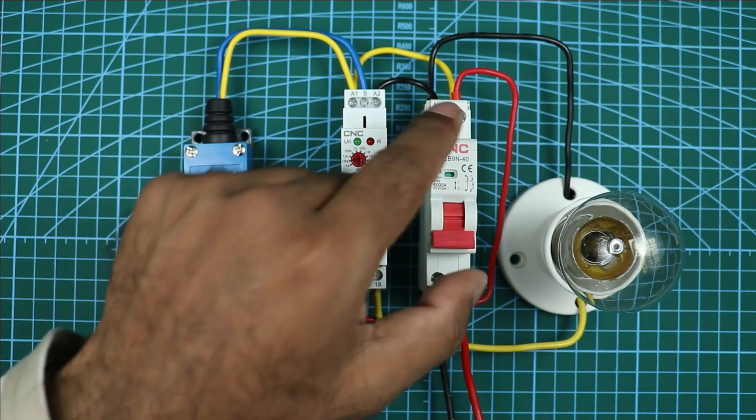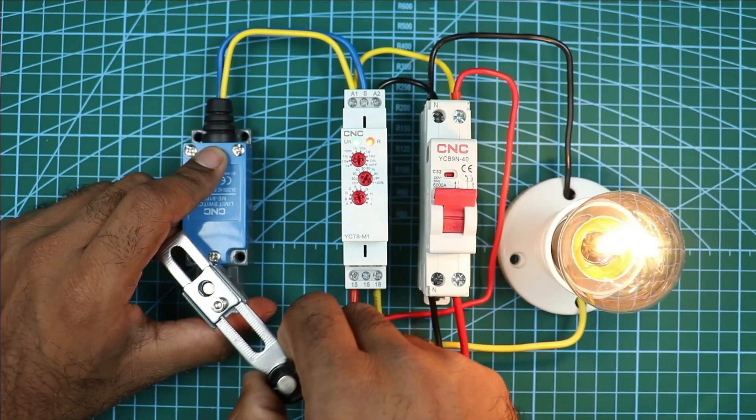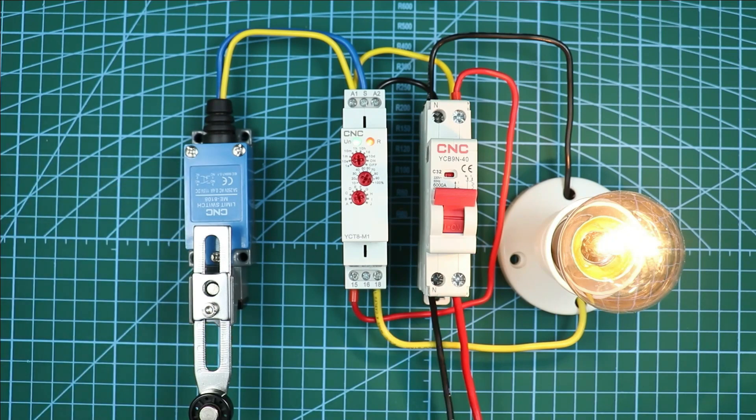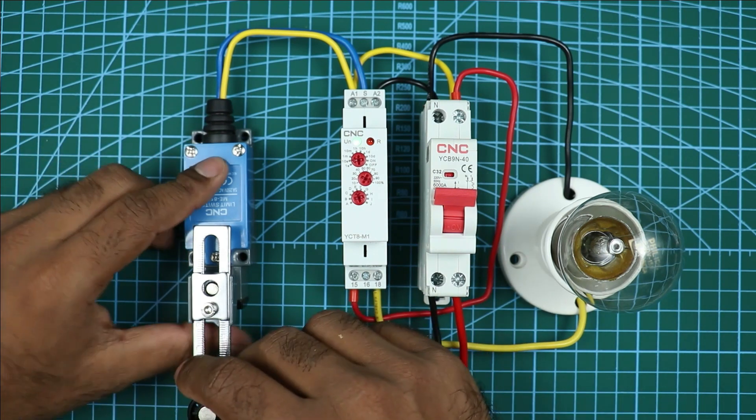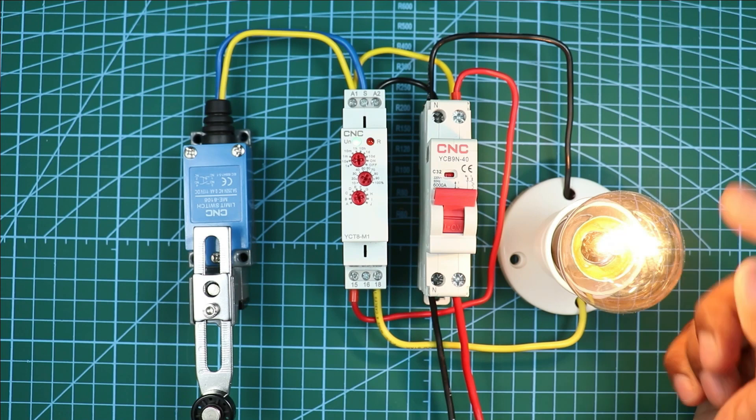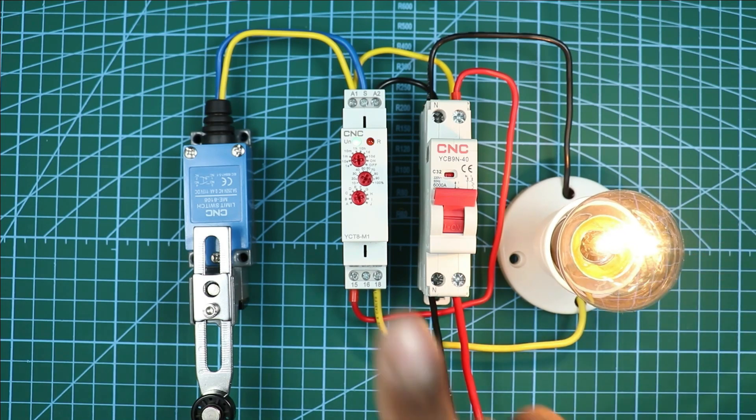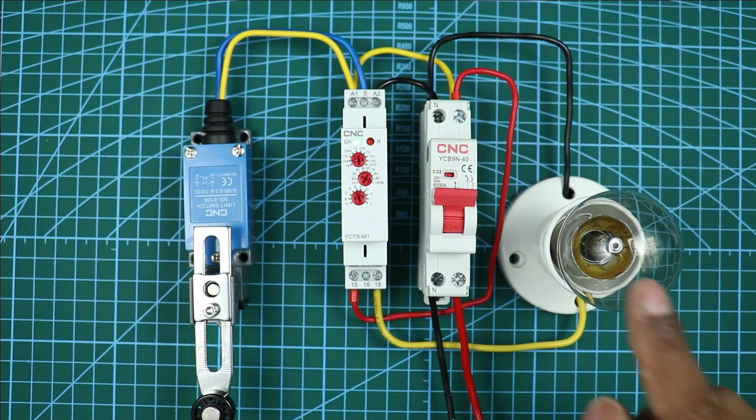Now if I turn on this MCB, after turning on MCB when I operate this limit switch, you can see our lamp turned on. I programmed 10 seconds in this timer, so after 10 seconds lamp will be turned off. You just saw that lamp is turned off. If any target operates this limit switch, then load will be turned on and this load will remain on only for 10 seconds because we programmed 10 seconds in this timer. After 10 seconds, load will automatically turn off.